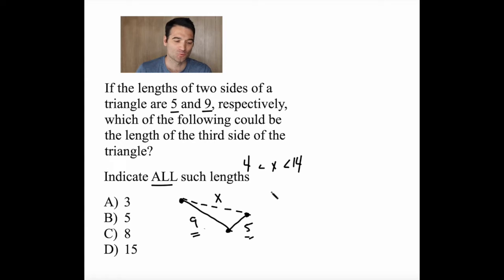So to formalize this rule, you're just going to say that x has to be smaller than a plus b, the two sides. And x has to be greater than a minus b, the difference between the two sides.